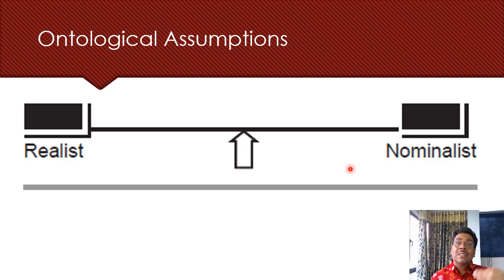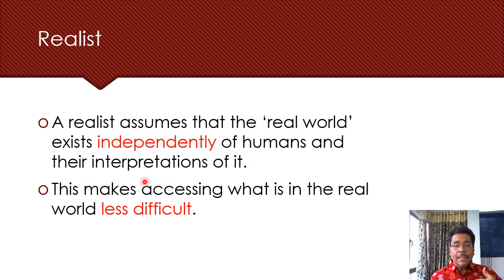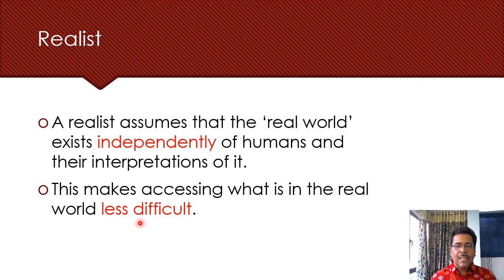Ontology is basically about what is reality — is it what we see or something beyond that? A realist assumes that the real world exists independently of humans and their interpretations. It is real out there, and our job is just to understand it or make sense of it. This makes accessing reality less difficult because whatever you see is what you get — a very straightforward assumption that doesn't require dealing with interpretations.